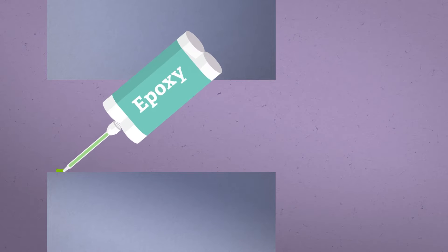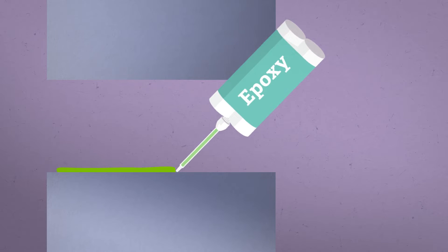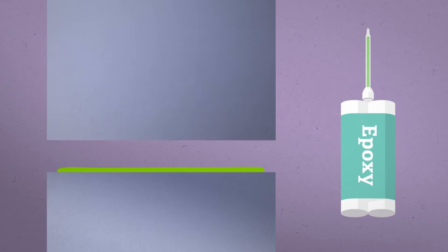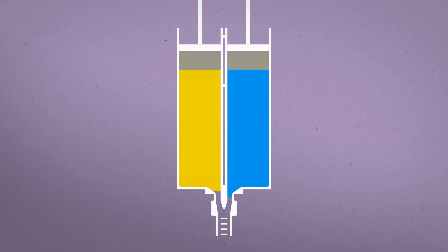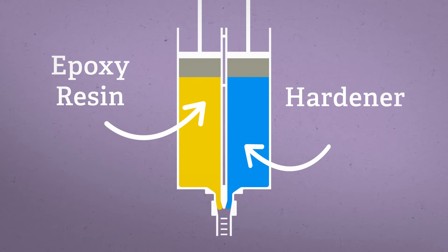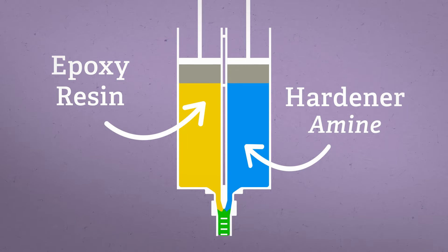Epoxy adhesives, also known as epoxies, are structural adhesives. This means they become part of the structure they are bonded to. Epoxy adhesives consist of two components: the epoxy resin and a hardener element, usually an amine.